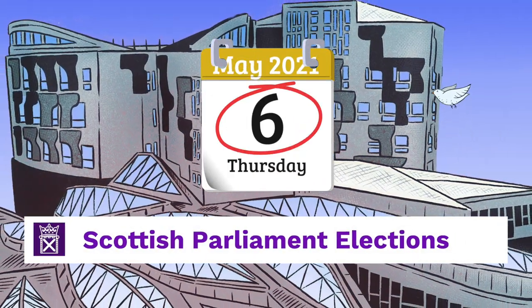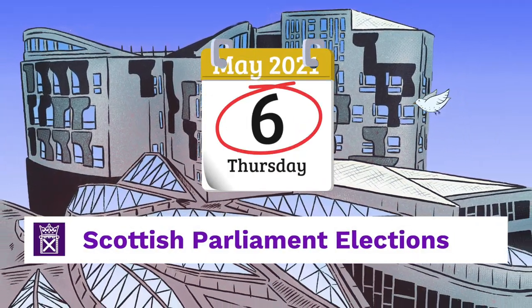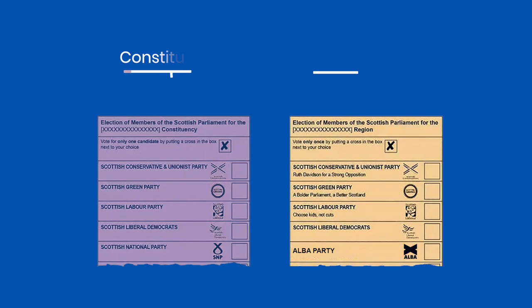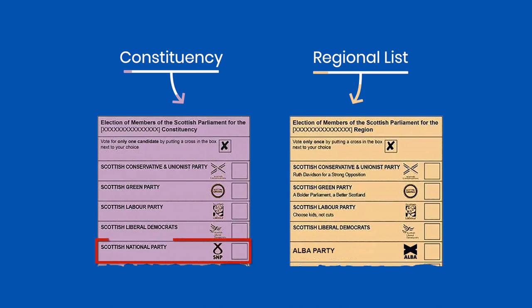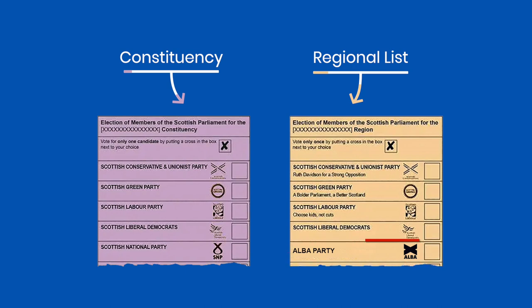The Scottish Parliament elections take place on the 6th of May. Voters will be given two ballot papers: one for the constituency they are registered in and another for the region to which the constituency belongs. The constituency ballot paper is for the individual candidate you want to get elected as your local MSP. The regional ballot paper is for the party you want to elect for the region.